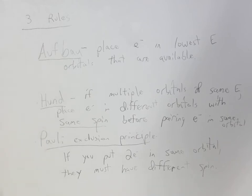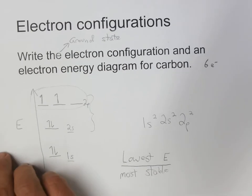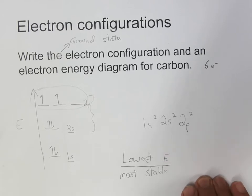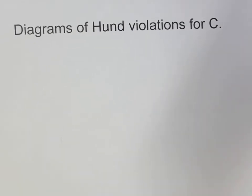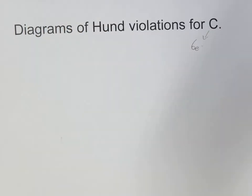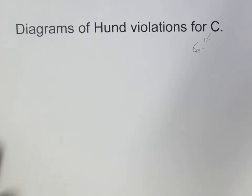So the Aufbau Principle, Hund's Rule, and Pauli Exclusion Principle are things you might want to commit to memory so you can recognize when they're followed and when they're not. If you're ever trying to write the ground state electron configuration for an atom, you have to follow these three rules to make sure the electrons are placed correctly. Here's our first carbon example, and what I often like to do is show examples where the principles are violated.